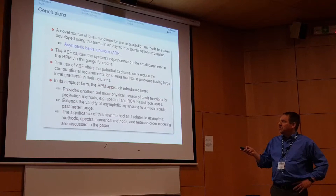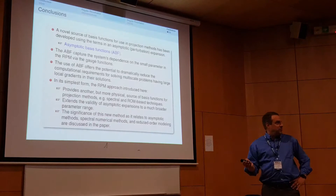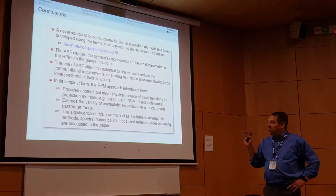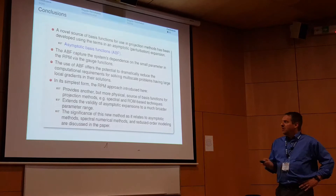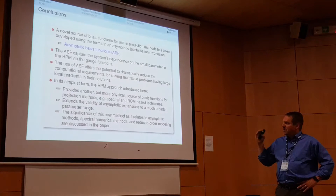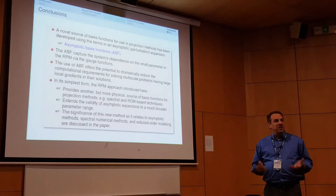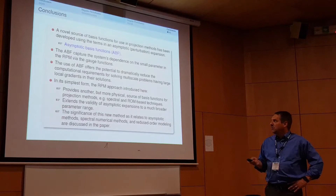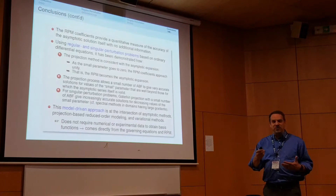More detail is in the paper. As it relates to ROM-based methods, this can simply be thought of as another source of basis functions — a model-driven approach that contains physical information about the problem within the basis functions, including the parametric dependence. From an asymptotic methods perspective, this approach resurrects classical asymptotic expansions for interesting problems, extending their validity to a much broader range of the parameter epsilon. Additionally, the RPM coefficients provide a quantitative measure of the quality of the asymptotic expansion — something that has always been difficult to assess without outside information.